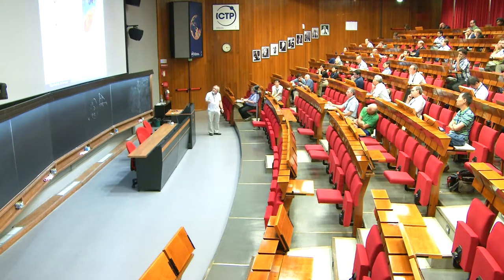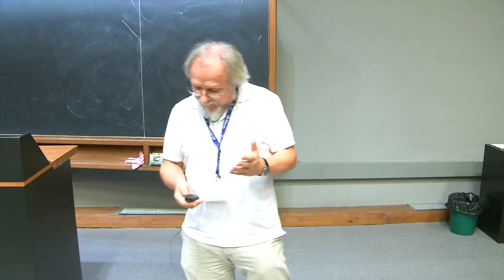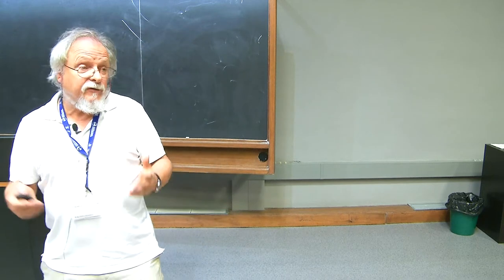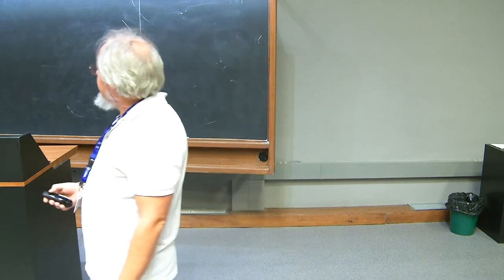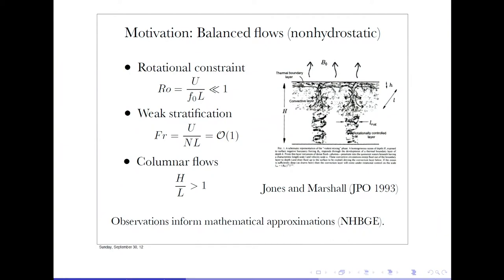The consequence of this quasi-geostrophic approximation is that the motion is primarily horizontal with hydrostatic balance in the vertical. That's very restrictive because you cannot, using that kind of theory, describe convective phenomena. Convective phenomena are important in a variety of contexts in the atmosphere — for example, formation of cumulus clouds or the downwelling of the thermohaline circulation in the Labrador Sea. So what we want to do is study structures that have significant vertical motions, and that means we have to relax the conditions under which the quasi-geostrophic approximation applies.